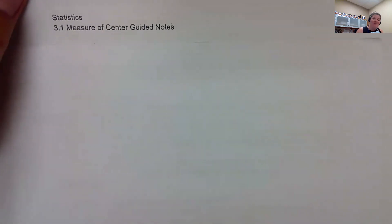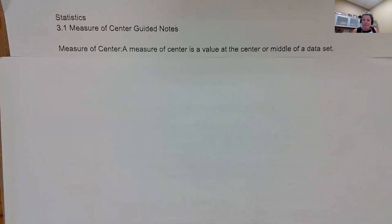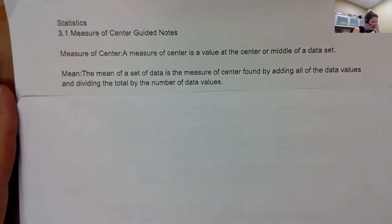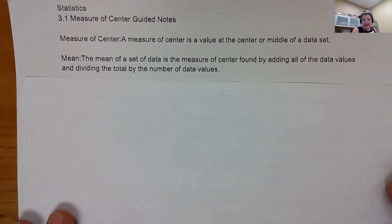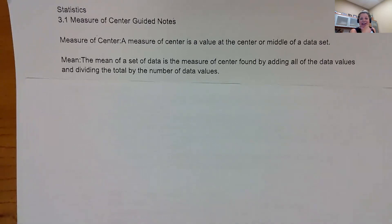So what is a measure of the center? It's like the average, the idea of the middle of my data, about where everybody is. A measure of center is a value at the center or middle of our data. The main way that we find that center is the mean. The mean of a set of data is the measure of the center found by adding all the data values and dividing by the total number of data.